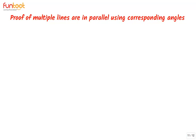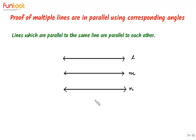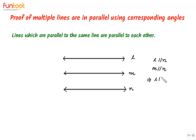Let's understand the proof of multiple lines in parallel using corresponding angles. The statement of this proof says: if L is parallel to N and M is parallel to N — meaning lines L and M are both parallel to the same line N — then this implies that L is parallel to M. That means this line is parallel to this line also.